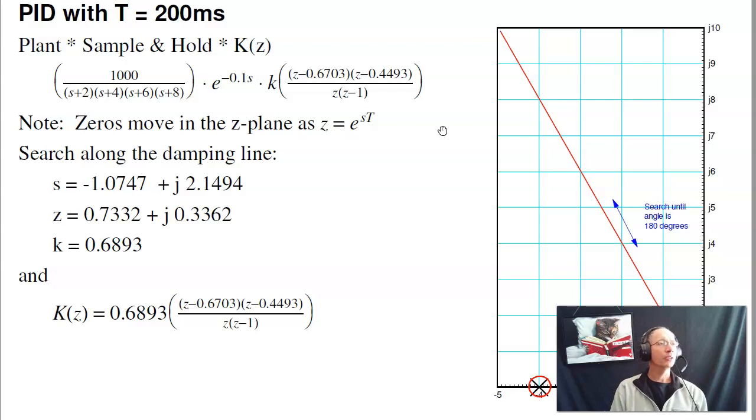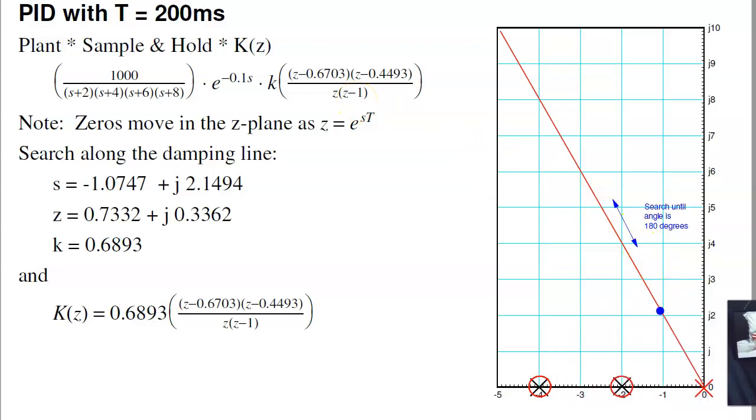So let's try it again with a 200 millisecond sampling rate. And in this case, I'm not going to do the first method because that's kind of annoying. I have to recalculate g of s and all that. I'll use the second method where I iterate on a hybrid or mixed plane system. G of s doesn't change. That doesn't change with the sampling rate. My sample and hold does change. That's a half sample delay. So with a 200 millisecond sampling rate, this becomes a 100 millisecond delay. My compensator changes. The pole at minus 2 becomes 0.67 when t is 0.2. Pole at minus 4 becomes 0.44. I'll replace it with the pole at the origin and plus 1. Now I'll search along the line, search along this line until the angles add up to 180 degrees. And I wind up with s is minus 1.07 plus j2.14. z is 0.7 plus j0.33. And k is 0.68. So here's my compensator.